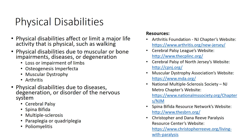Other physical disabilities are due to diseases, degeneration, or disorder of the nervous system. This includes cerebral palsy, which is loss or impairment of motor function due to brain damage; spina bifida, a birth defect that causes a baby's spinal cord to not develop correctly; and multiple sclerosis, which is a disease of the brain and spinal cord that impacts the nerves. Paraplegia, which is impairment in motor or sensory function of the lower extremities, and quadriplegia, which is impairment of all four limbs, are also physical disabilities. Finally, poliomyelitis is a viral disease that can affect the central nervous system and cause temporary or permanent paralysis.